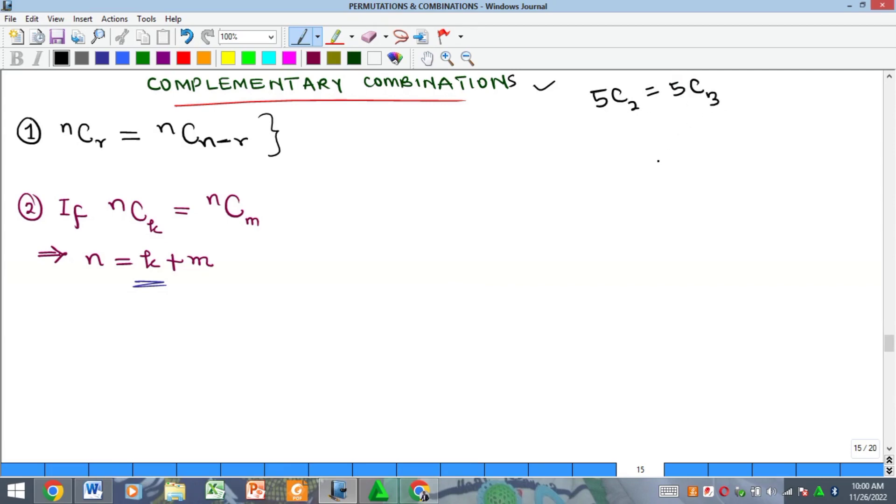We can check if this is true. For instance, if I try to simplify this I'm going to have 5! over 2! (which is my r) and then (5-2) which is 3!. And of course if I simplify this I will have 5! over 3! (which is my r) then (5-3) which is 2!. You can see that definitely these two things are actually equal.